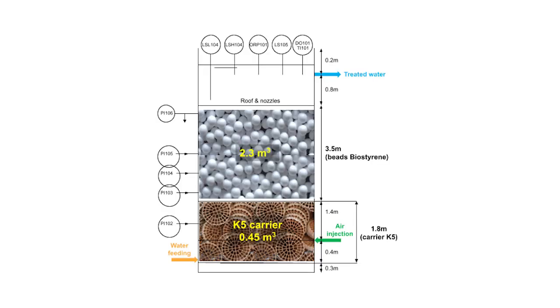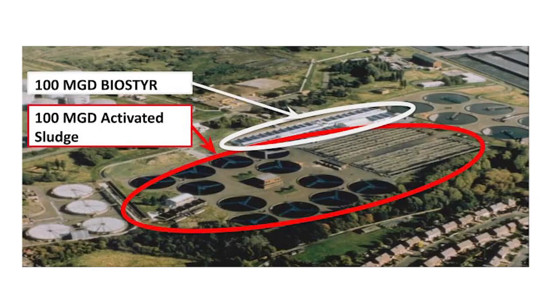The Duo, as the name implies, combines MBBR and conventional BioStyr, further increasing the biological capacity and hydraulic throughput of the system. These intensification functions help significantly reduce the total system footprint compared to conventional activated sludge processes. The BioStyr Duo system can shrink the footprint of a typical activated sludge process by up to 75%, and it can also shrink the footprint of a conventional BioStyr system by up to 40%. It also provides a more automated operating experience.